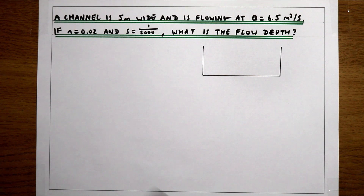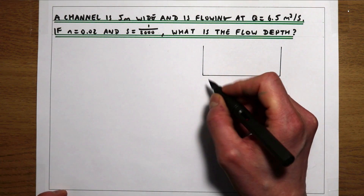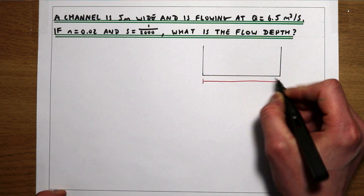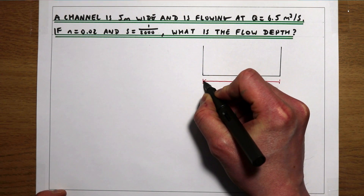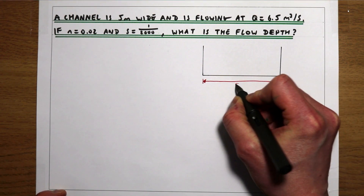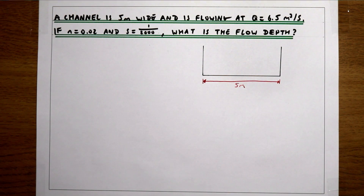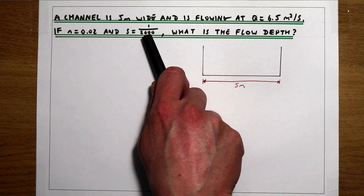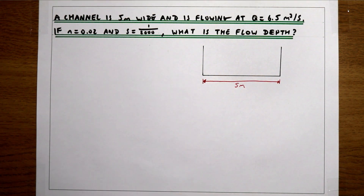In this example we've got a channel that is five metres wide, so the base of the channel B is five metres wide. We're told the Manning's roughness for the channel is 0.02 and the slope of the channel, the longitudinal slope, is 1 over 2000.